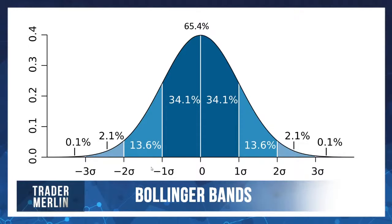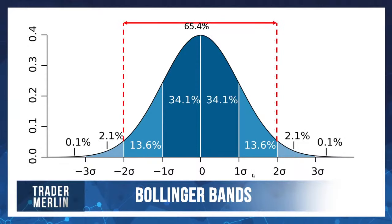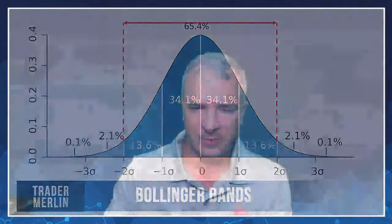If we take two standard deviations - from negative two sigma to positive two sigma - that range contains about 95.4% of the data. So in theory, if you apply this to price charts, 95% of the time price should be within two standard deviations - within those goalposts, if you will.